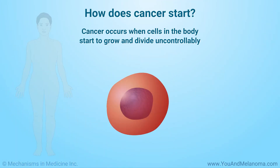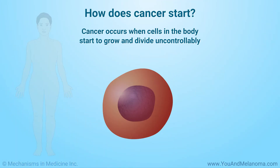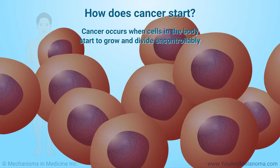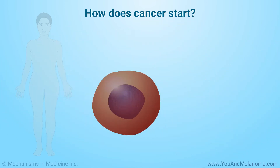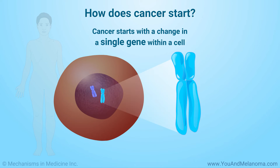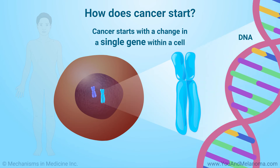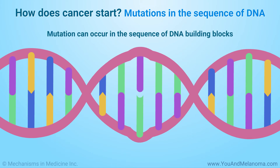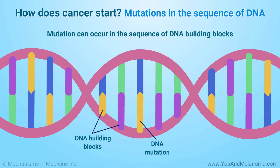Cancer occurs when cells in the body start to grow and divide uncontrollably. It starts with a change in a single gene within a cell. Genes are made of DNA, the basic genetic material of life. Genes can change in two ways. First, a change or mutation can occur in the sequence of DNA building blocks that make up a gene.